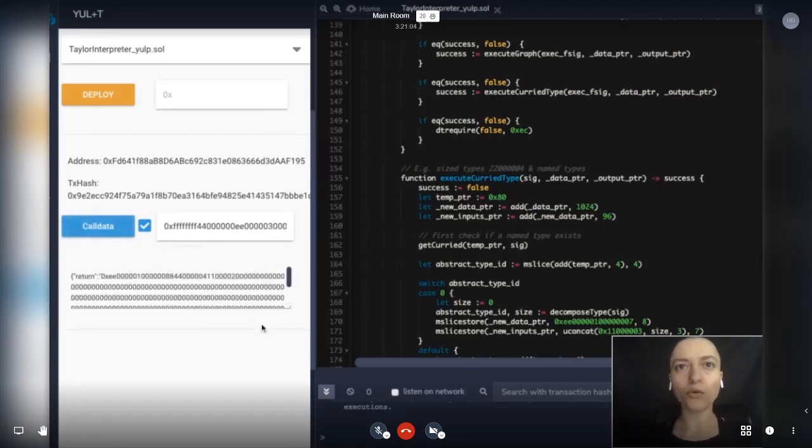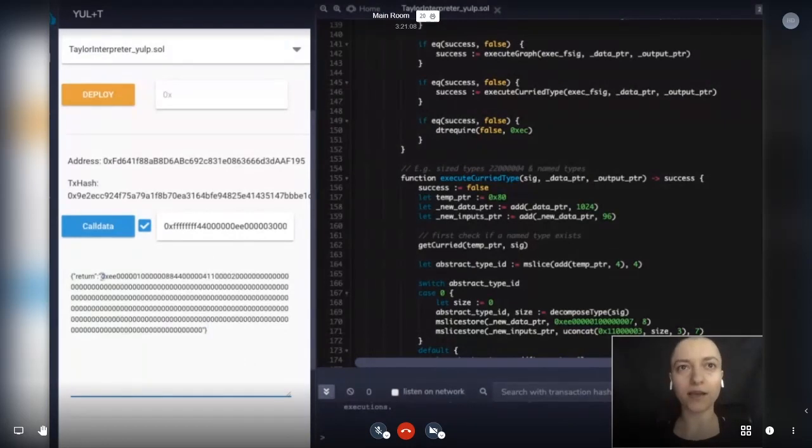We call this and we get again another tuple with one element, and the typed value is this one. This is the signature for an array with length 4 which contains uint of size 32, so 256 in Solidity.